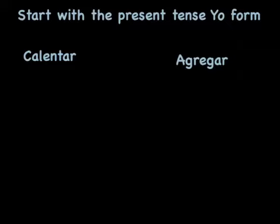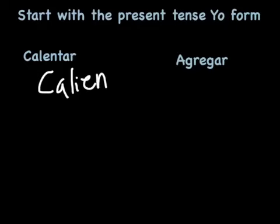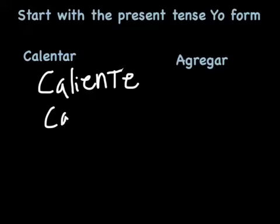Now to make a formal command, you simply start with the yo form. So for calentar, meaning 'to heat,' you would say caliento. Then you drop the o and you add an e: caliente. For the plural, if you're talking to more than one person, it would be calienten.